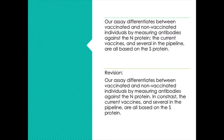What I would suggest is to revise it this way: 'Our assay differentiates between vaccinated and non-vaccinated individuals by measuring antibodies against the N protein. In contrast, the current vaccines and several in the pipeline are all based on the S protein.' It's the same information, but it's a bit more clear what the relationship between those different clauses is intended to be.